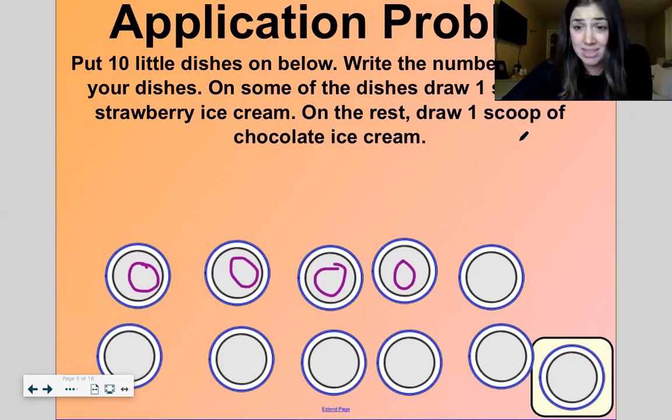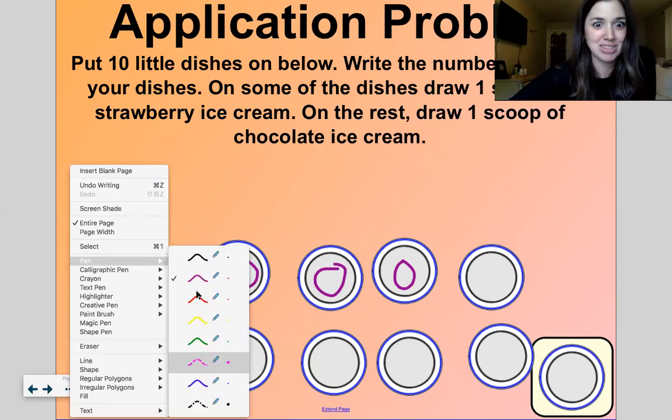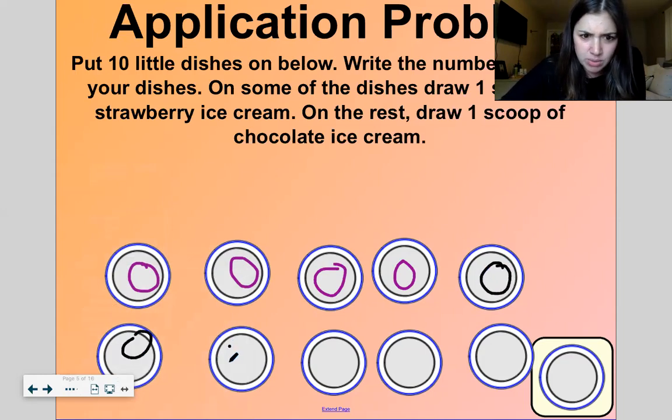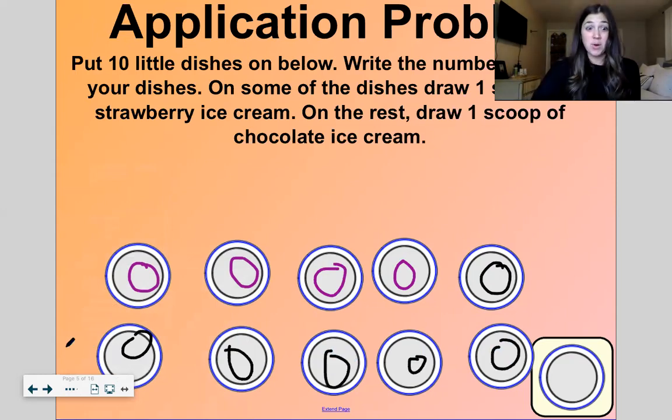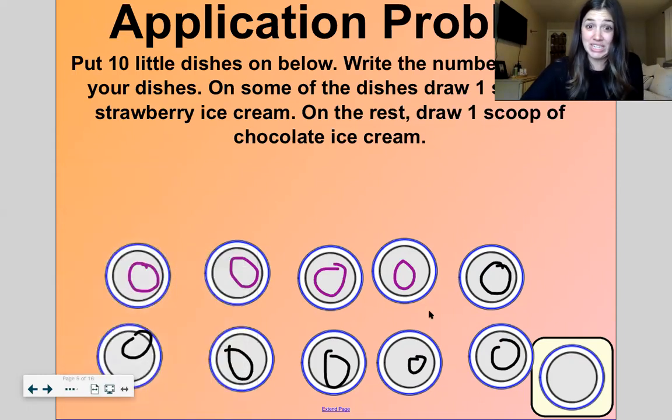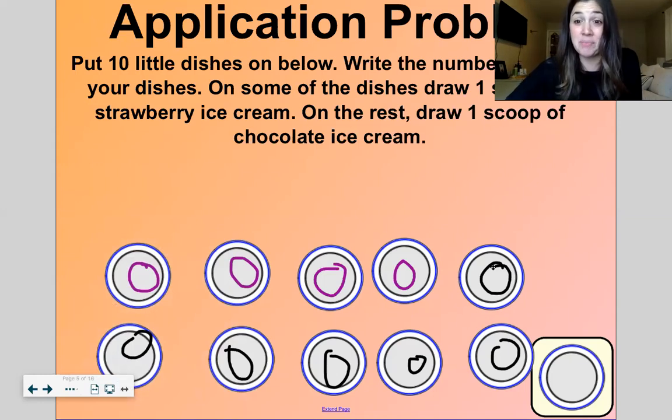On the rest, draw one scoop of chocolate ice cream. Oh, I had chocolate ice cream last night. I love chocolate ice cream. Okay, I don't really see a brown for chocolate. So I'm just going to do black and we'll pretend it's a really dark chocolate. Okay, so I have to draw on the rest. So I'm going to draw my scoop of chocolate on the rest of my dishes.